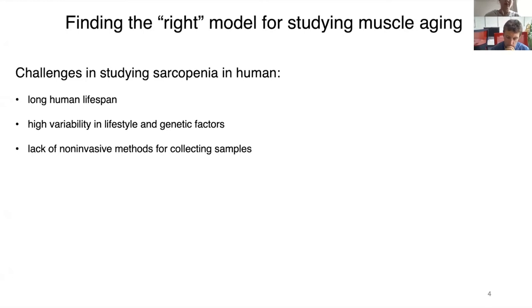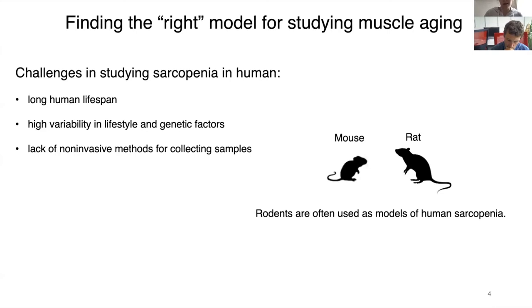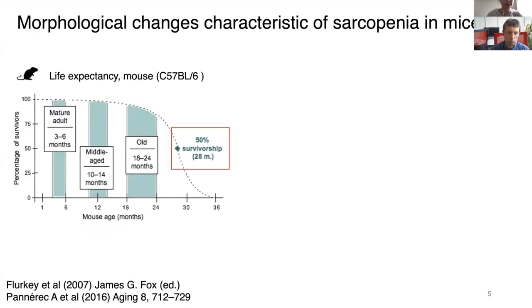Studying sarcopenia in humans is very challenging because of the long human lifespan, high variability in lifestyle and genetic factors, and the absence of non-invasive methods for collecting muscle samples. Therefore, rodents — in particular mice and rats — are often used as models of human sarcopenia.